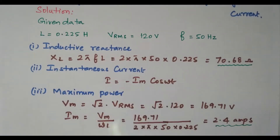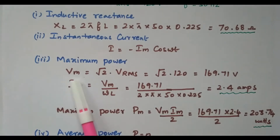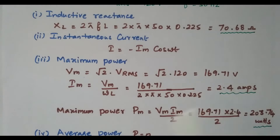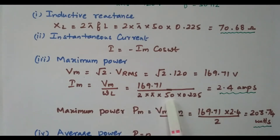The instantaneous current I = Im cos(ωt). For maximum power, the formula is Vm × Im divided by 2. First we find Vm and Im. Vm = √2 × VRMS = √2 × 120 = 169.71 volts. Im = Vm divided by ωL = 169.71 divided by 2π × 50 × 0.225, where ω = 2πf. This gives Im = 2.4 amperes.